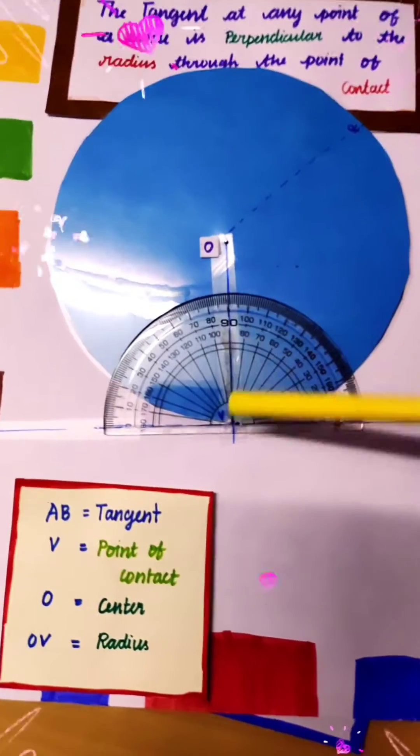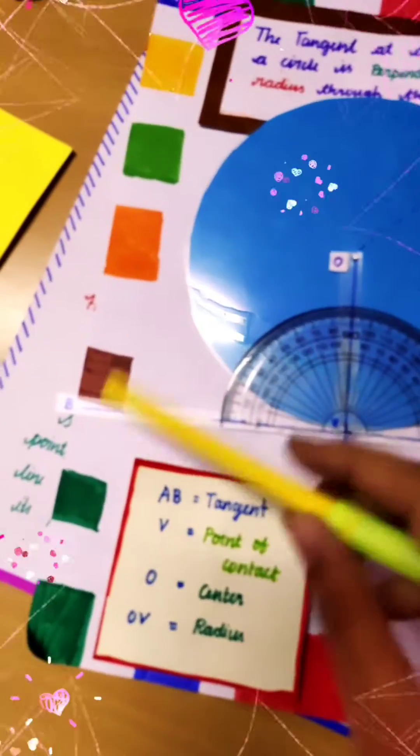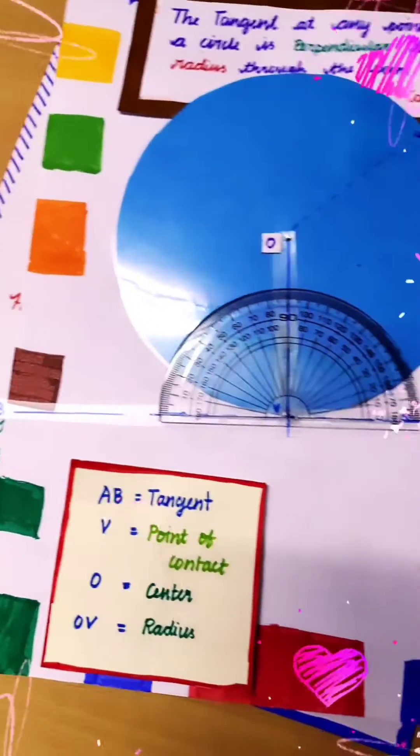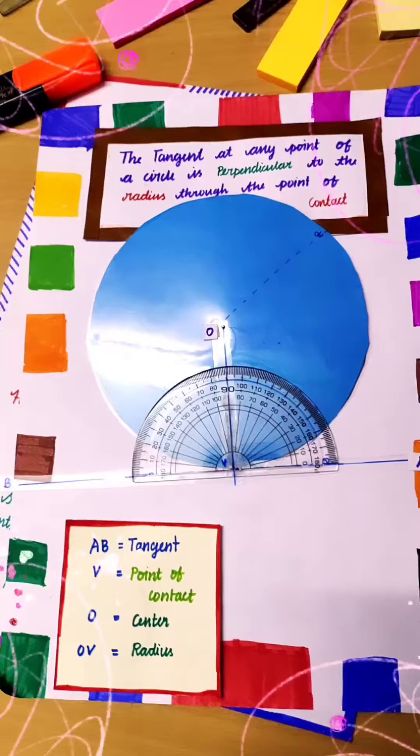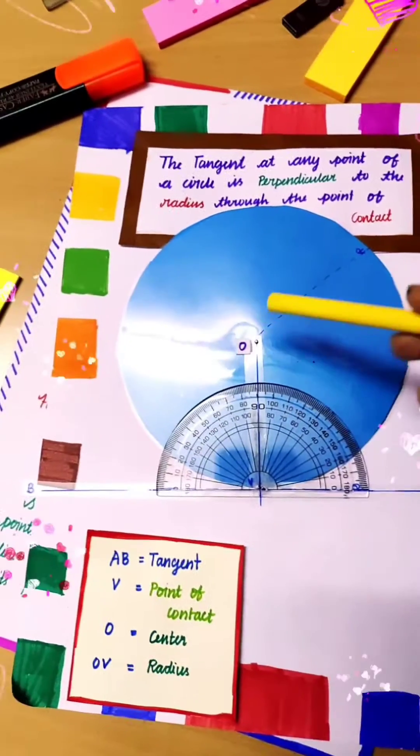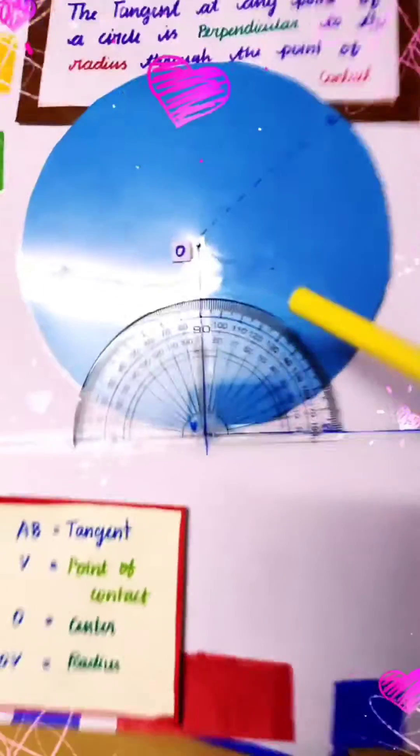OV is the radius of the circle, and AB is the tangent of the circle. I guess you are clear with this. So the tangent AB is perpendicular to the radius OV.